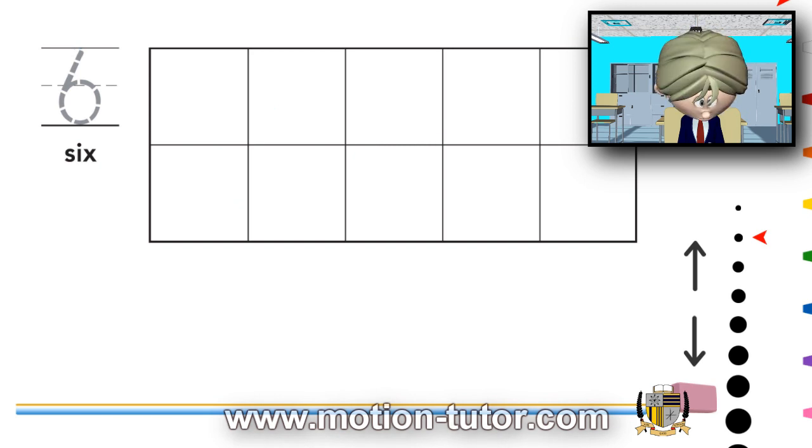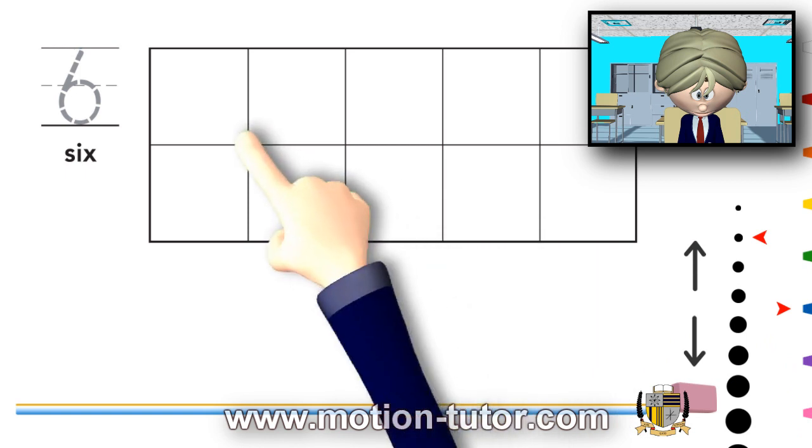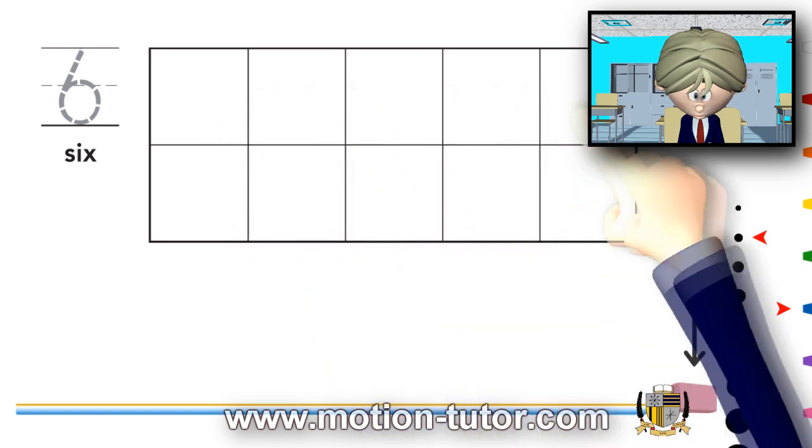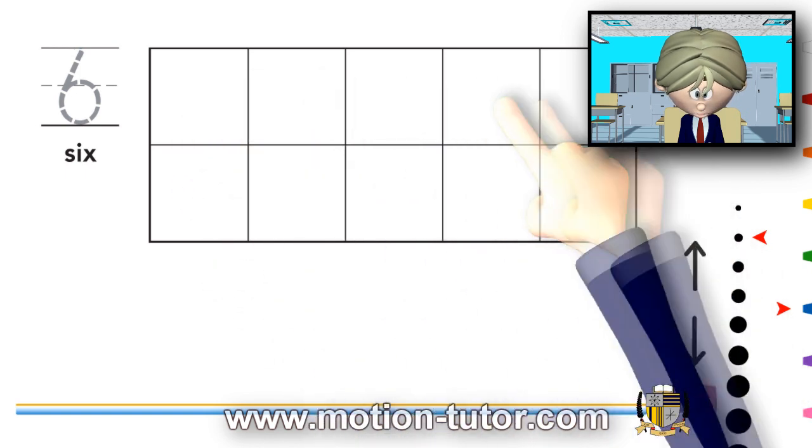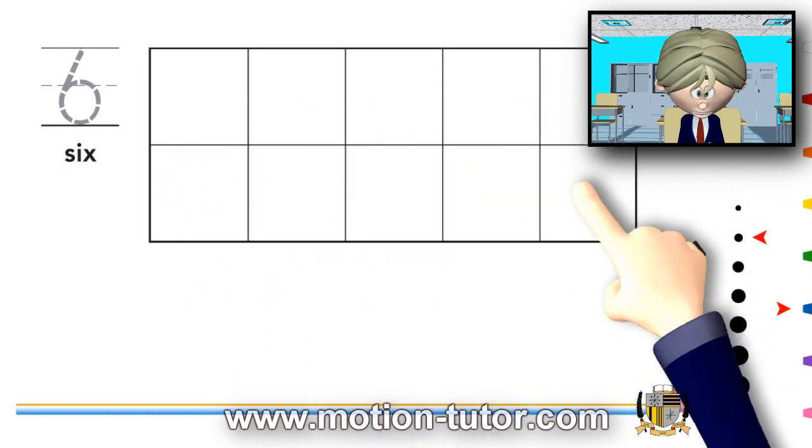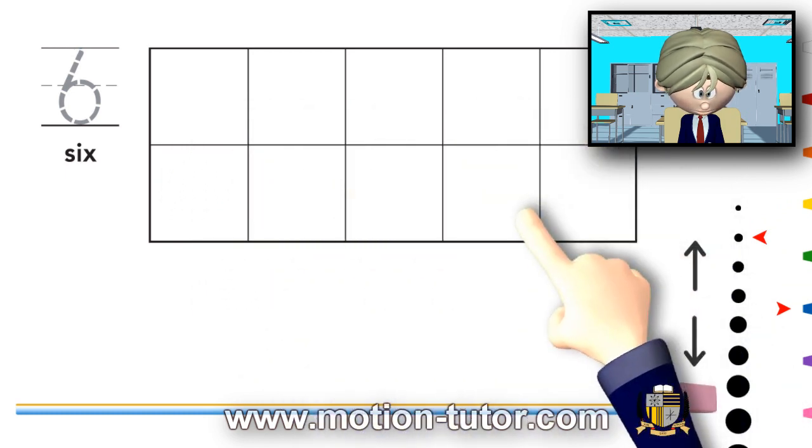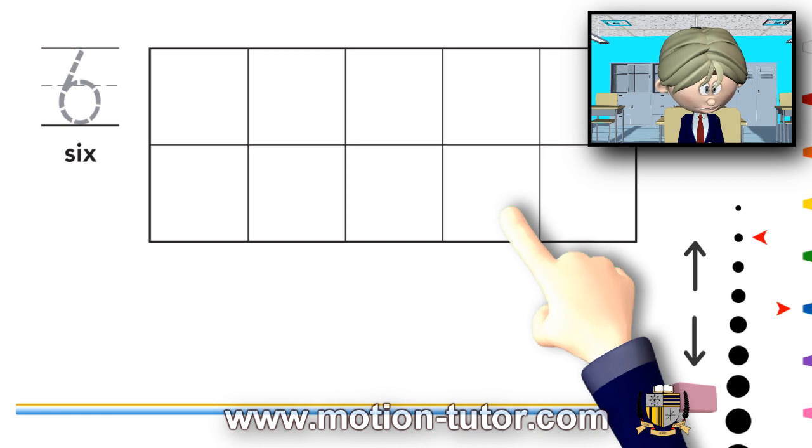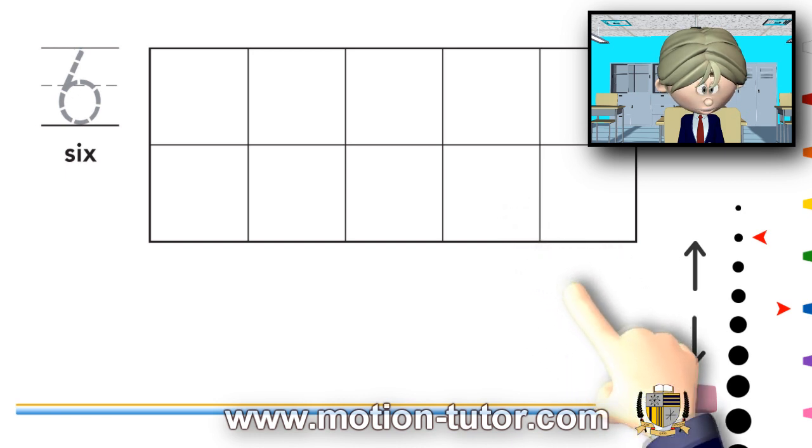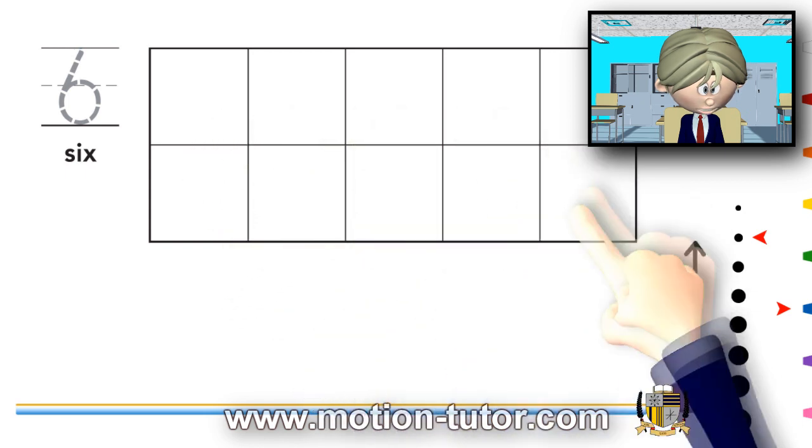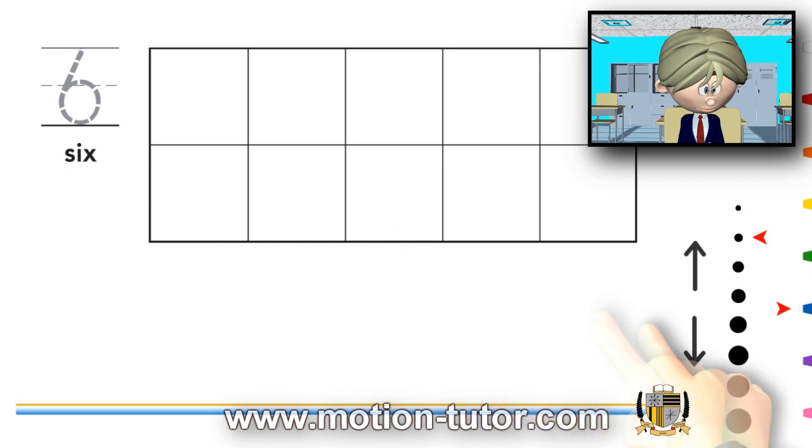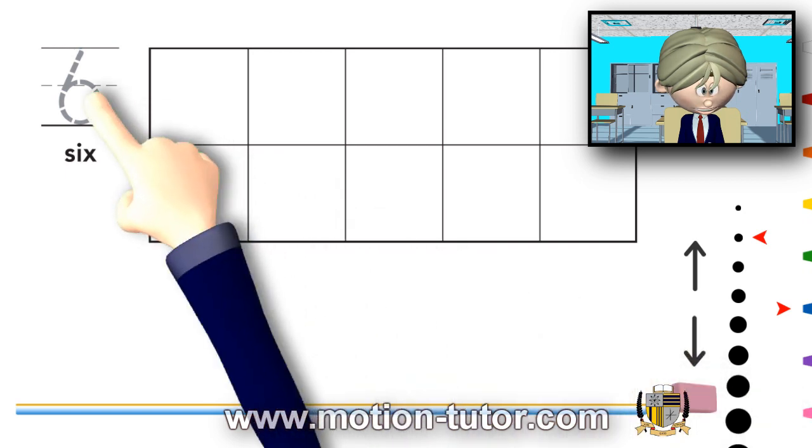Now, for this one, we will be using counters to further show how these numbers look. Now, what we're using here is called a 10 frame. In earlier lessons, we used a 5 frame. But now, since we are talking about numbers that are larger than 5, we're using something called a 10 frame. And I'll show you what we can do with this.